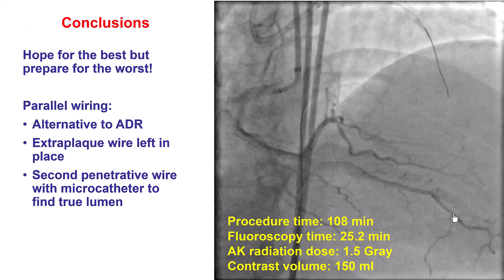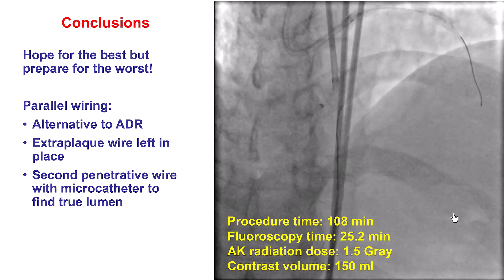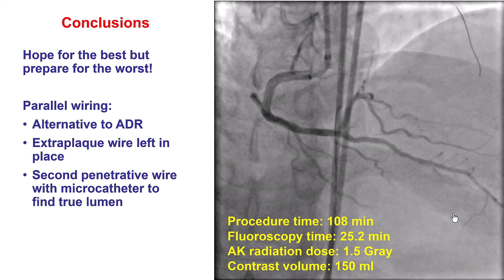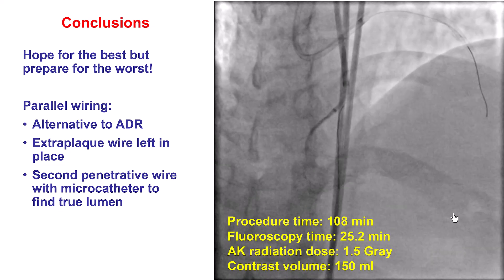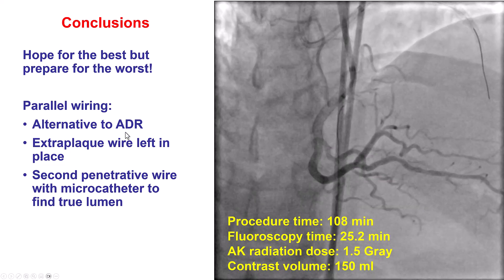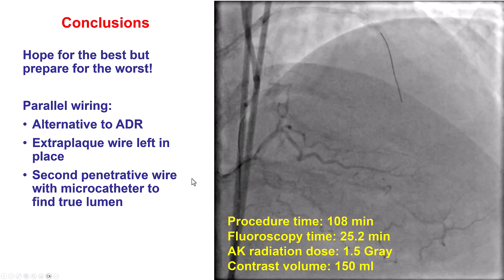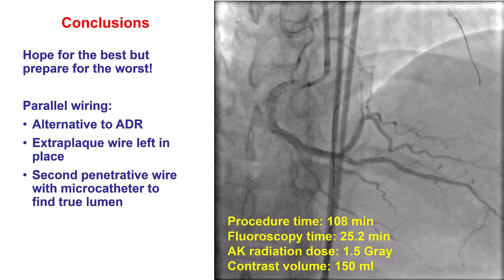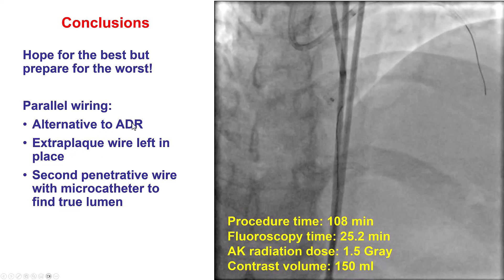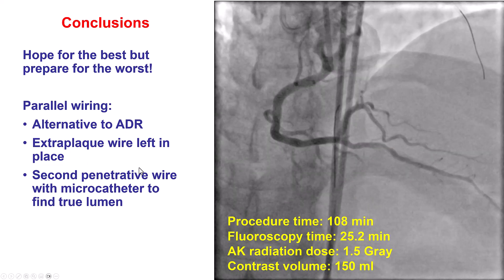In summary, this is a simple case but illustrates that although sometimes you may expect things to go very smoothly — in this case it seemed a fairly favorable CTO and the hope was that the wire would easily go into the distal true lumen — the wire instead went into the extraplaque position. You need to be prepared with options when this happens: either redirect the original wire, leave it in place and use the parallel wiring technique, or perform antegrade dissection reentry with a stingray balloon. In this case, we used the parallel wire technique, leaving the first wire in place and going with the second penetrative torqueable wire, the Gaia NEX2, which successfully crossed into the distal true lumen. This was less costly and easier than using antegrade dissection reentry. Redirection could have happened as well, but the polymer-jacketed wire may be more likely to cause dissection or hematoma.